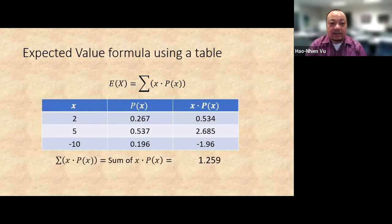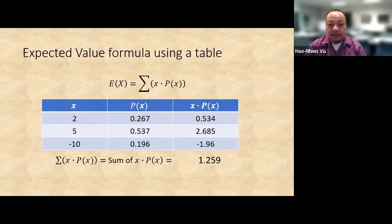Now we add the last column together. Sum of x times p of x is the sum of the last column and it equals 1.259. The expected value of x is 1.259. That's the typical expected value problem where you're given the probability distribution in the table format.